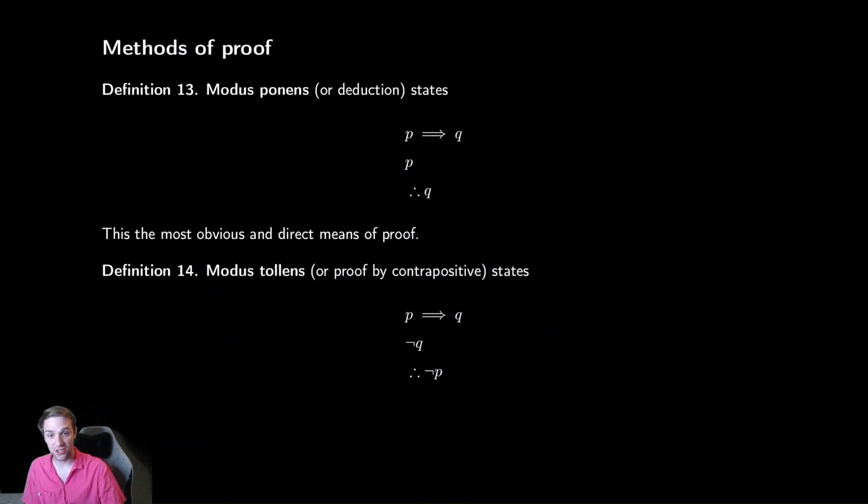So the first one is if someone walks up to you and just says, I know with absolute certainty P implies Q is true. Also with absolute certainty, I know that P is true. What can you tell me? So with the idea of an implication, that's an if-then. Whenever the first thing is true, the second thing is true.